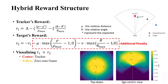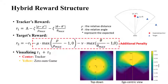The yellow zone is a zero-sum zone — the tracker's gain is the target's loss. The green surrounding zone is a non-zero-sum zone used at the beginning of training. We observed that the target is very easy to lose the tracker early in training, so we create this non-zero-sum zone to penalize the target if it quickly escapes from the tracker — ensuring the learning can move forward.